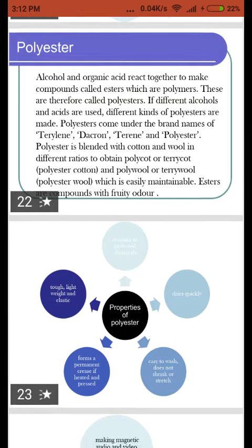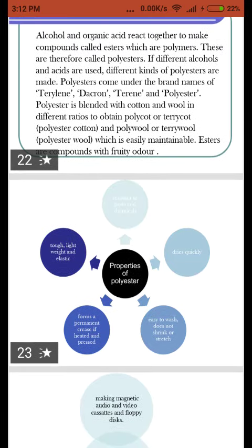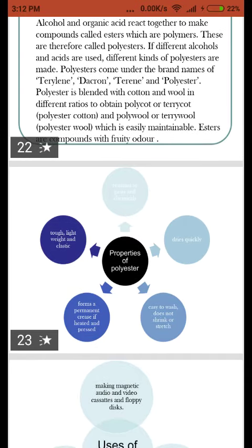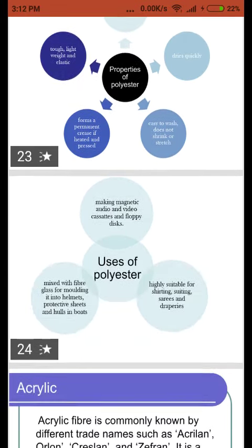Polyesters are a type of ester and come in different brand names like Terylene and Dacron. They are blended with cotton and wool to form polycot and terry wool, and they have various uses.